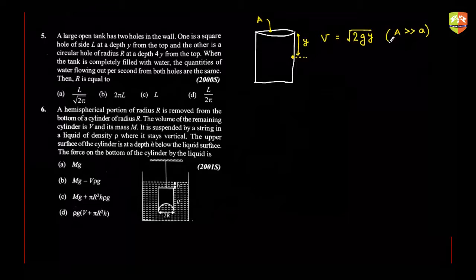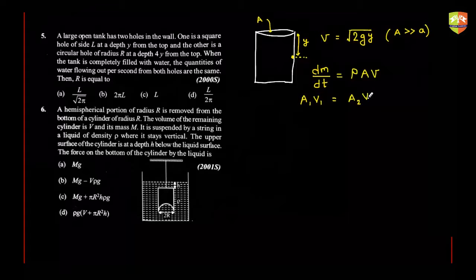You can also derive it, but it is good to remember. Now the quantity of water flowing out per second is dm/dt, which is the mass flow rate, equal to ρAv. If density is the same, I can say a₁v₁ = a₂v₂. This is not the continuity equation, but what is given here is that if this is the square hole and this is the circular hole, a₁v₁ equals a₂v₂ — that is what it means.